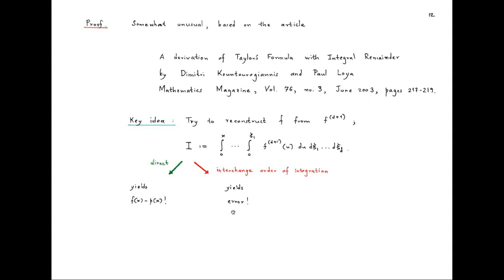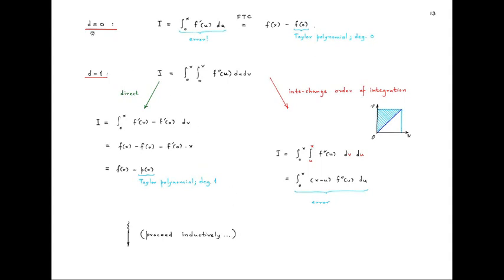Rather than writing the proof in full generality, we will experiment with the first few cases d=0, 1, 2 and then see that the proof can be completed by induction. For the d=0 case, we look at the integral of f'(u) du from 0 to x. First, we notice that in the d=0 case this is precisely the error delivered by Taylor's formula. On the other hand, by the fundamental theorem of calculus this equals f(x) minus the constant f(0), which is precisely the Taylor polynomial of f of degree 0. So Taylor's formula in the d=0 case is nothing but the fundamental theorem of calculus.